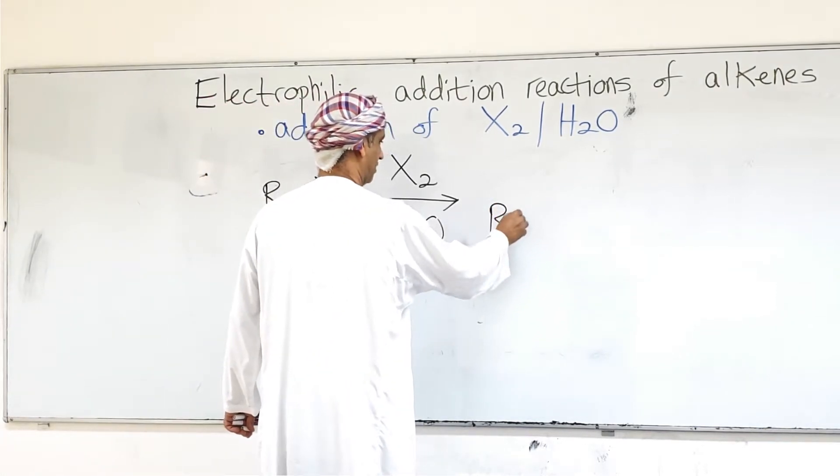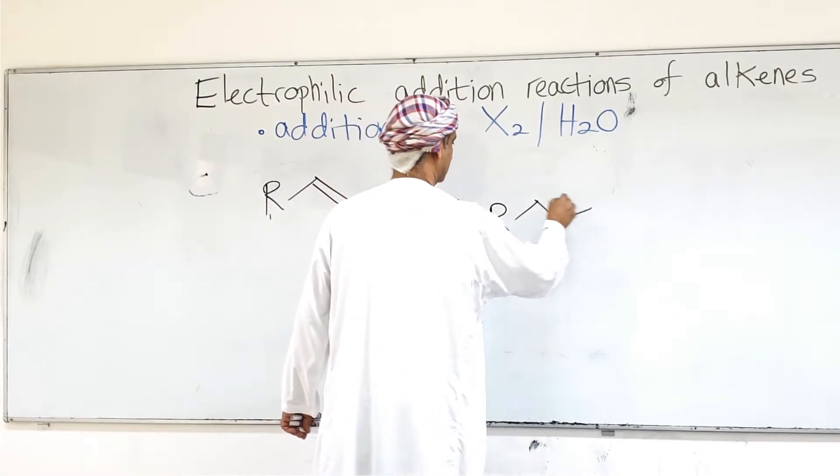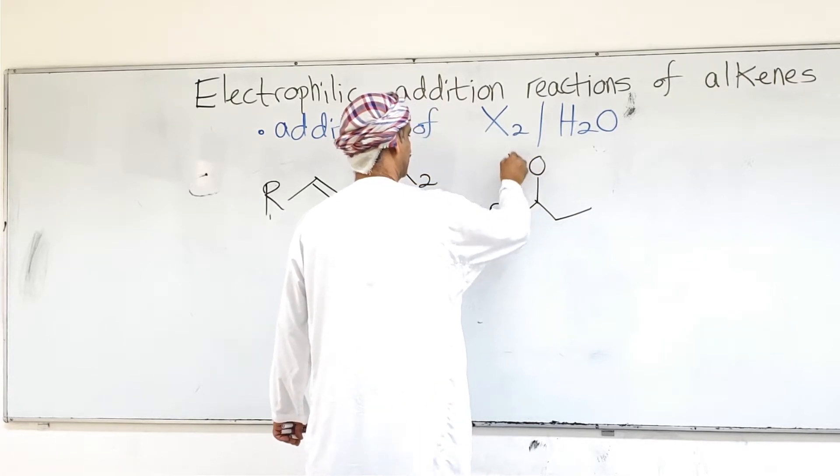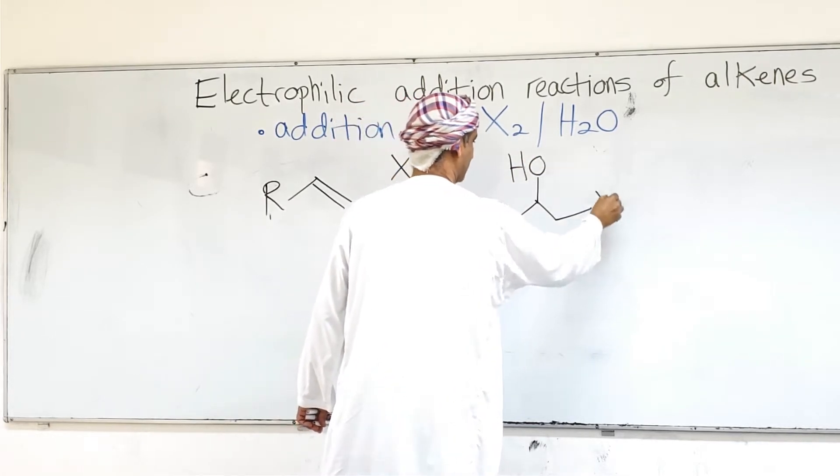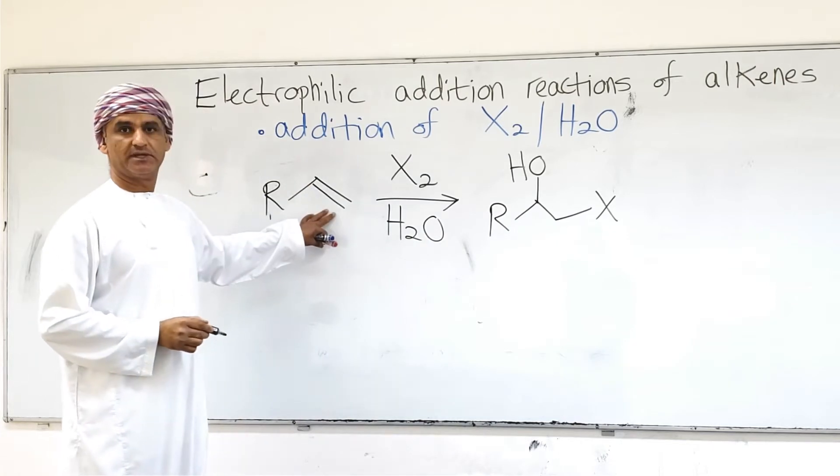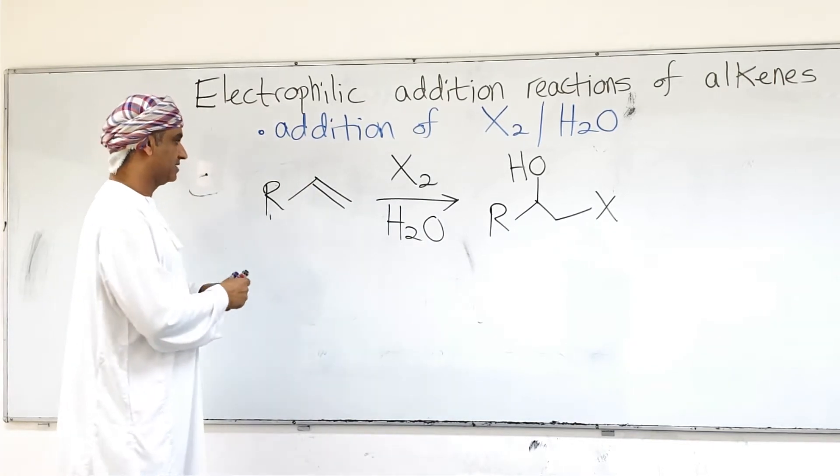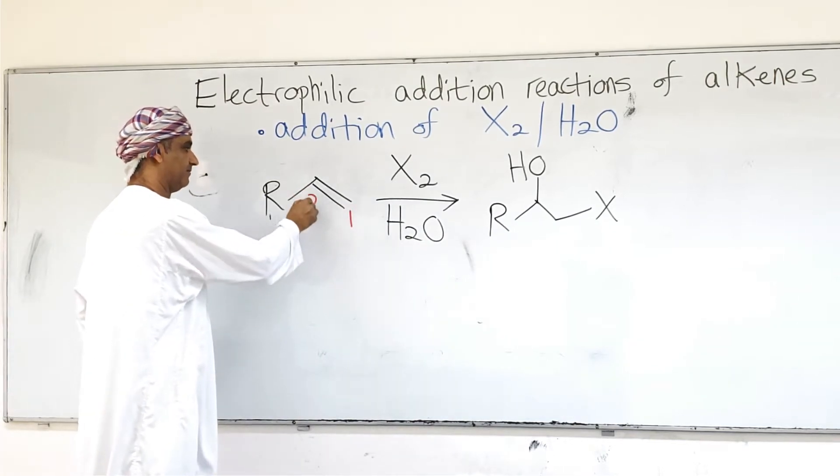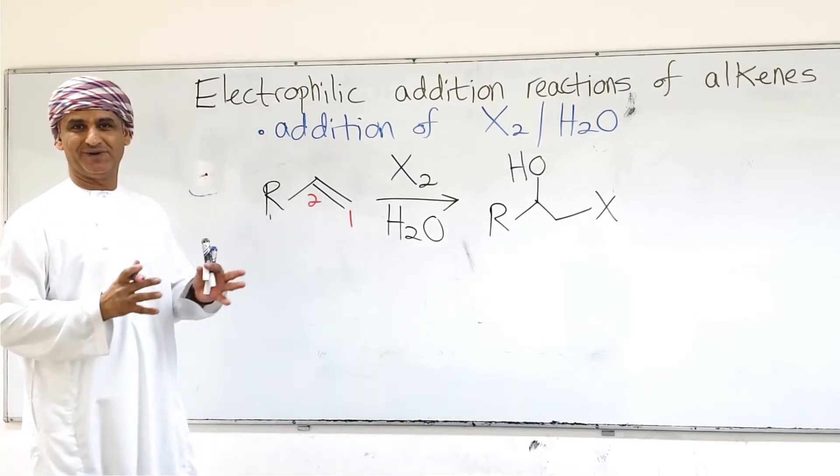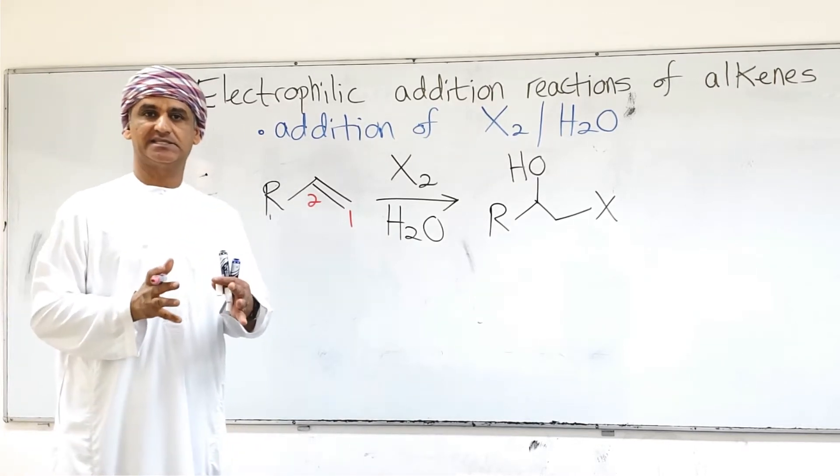So alkenes react with a halogen in the presence of water. The product that is obtained in this case is this one where an X bonds to carbon-1, an OH bonds to carbon-2. This is viewed, by the way, as addition of X and OH.